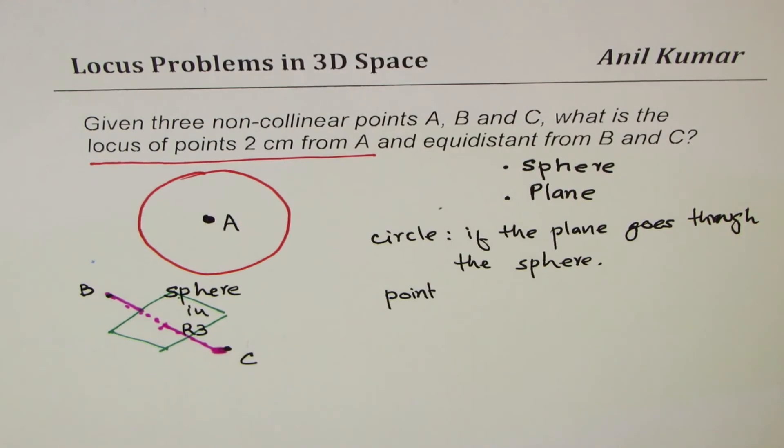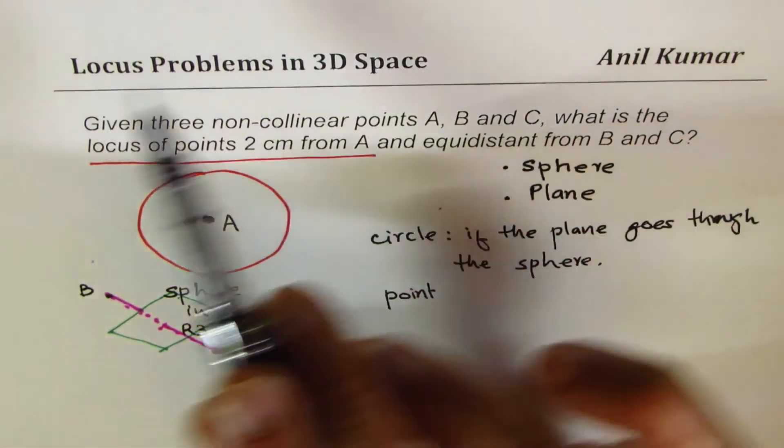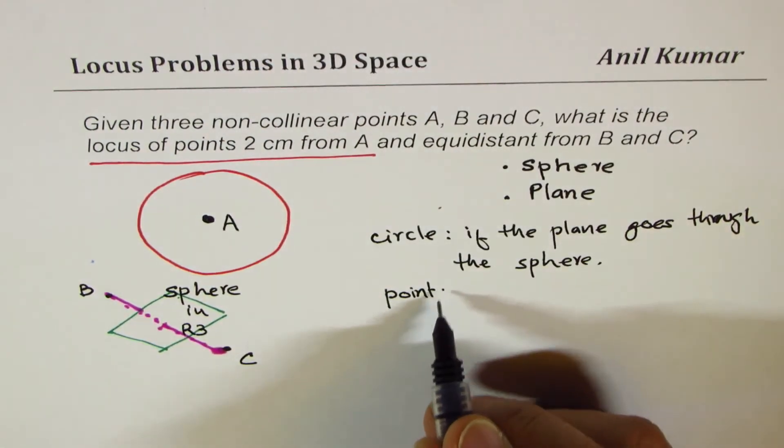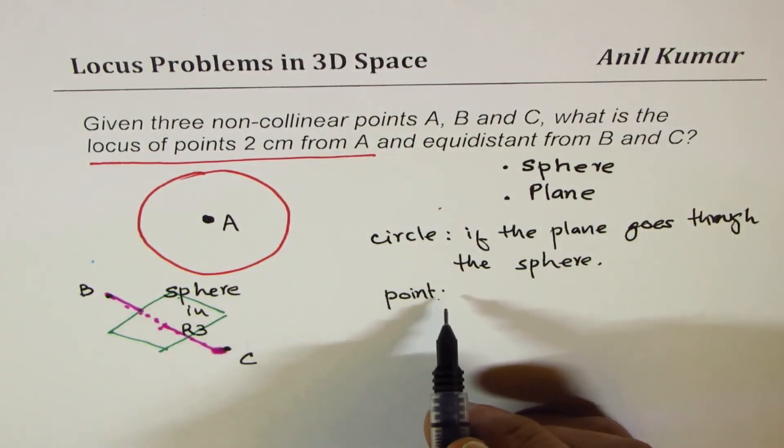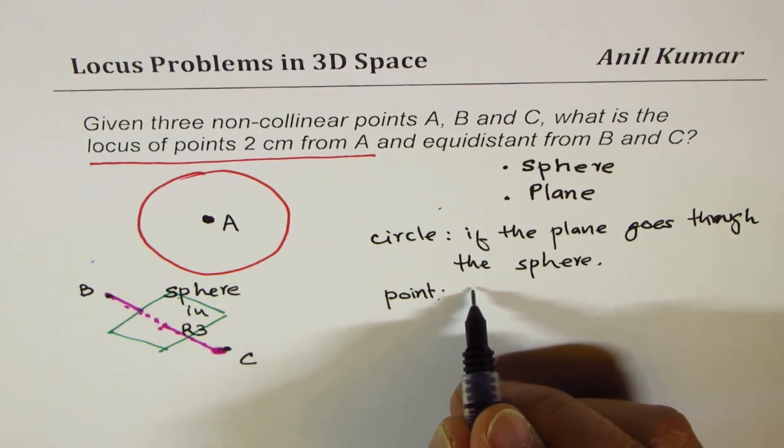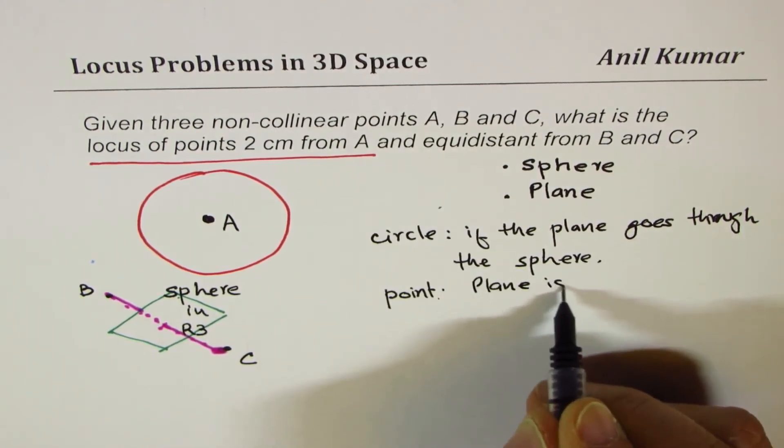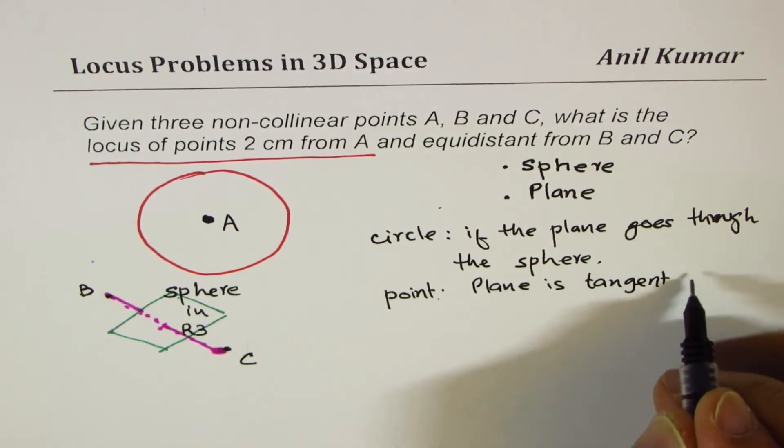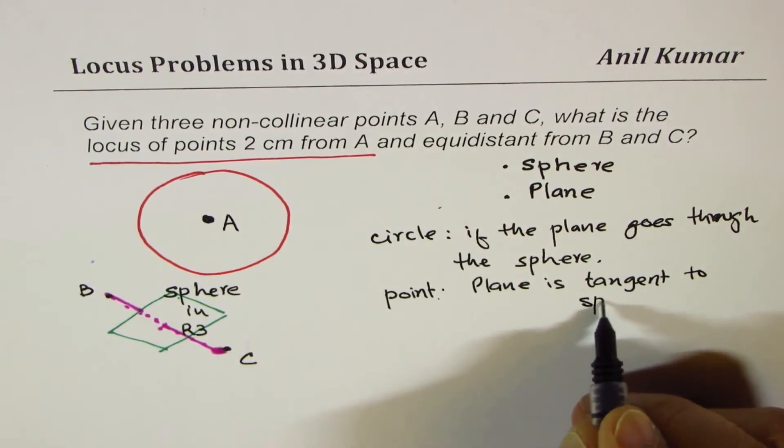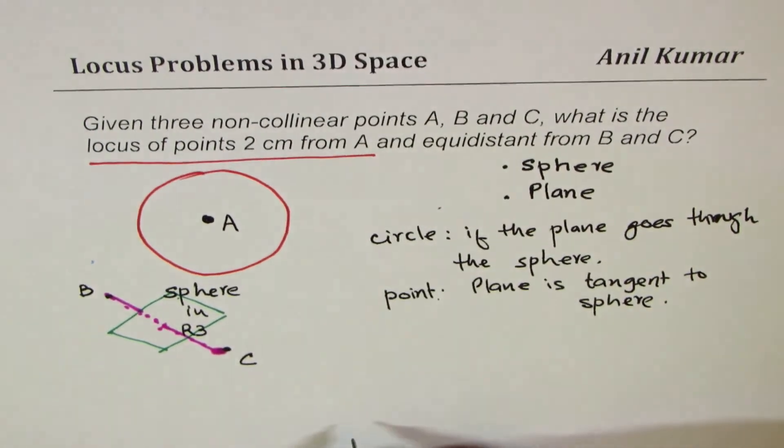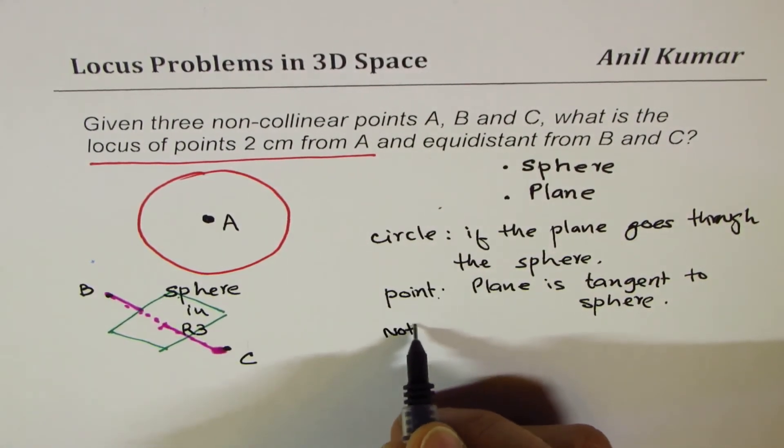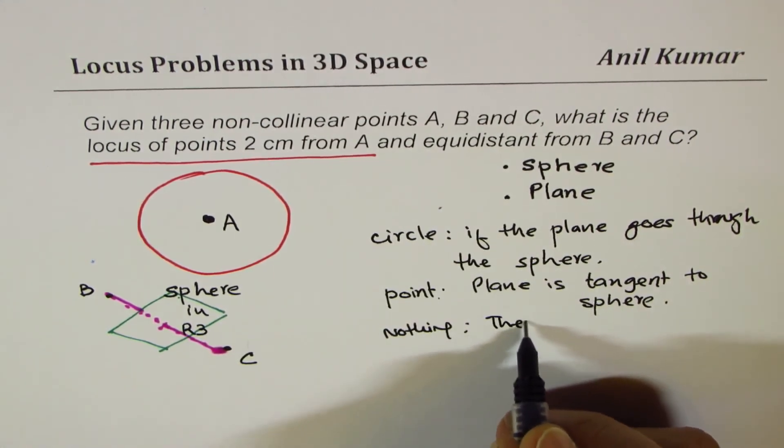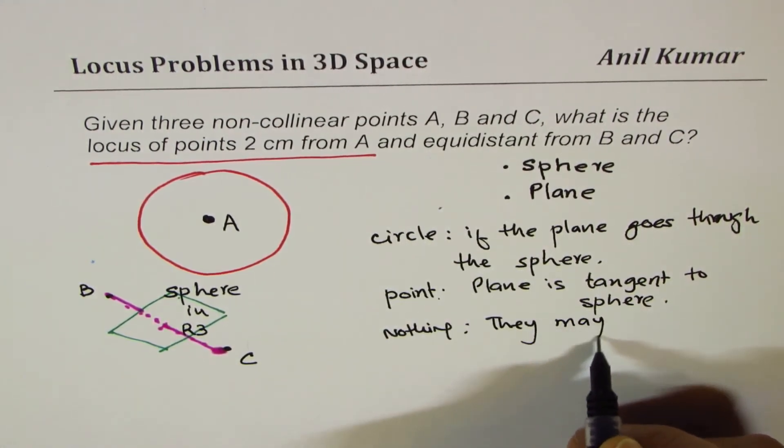that we have a ball sitting on this paper, right? So, this is a plane and we have a ball sitting on this paper, then point is the intersection, right? So, when plane is tangent, or we may have nothing, as they may not intersect, right?